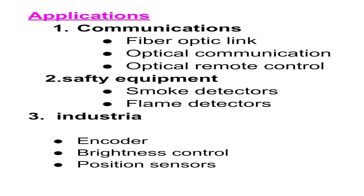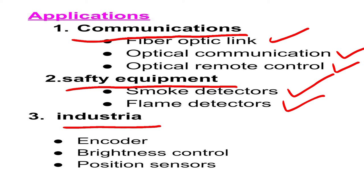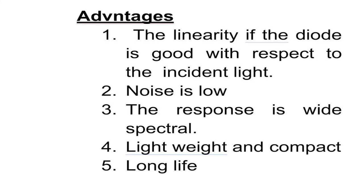The main applications of photodiode are in three areas. First, in communications — fiber optic links, optical communication, and optical remote control. Second, in safety equipment — smoke detectors and flame detectors. Third, in industrial applications — as encoders, brightness control, and position sensors.